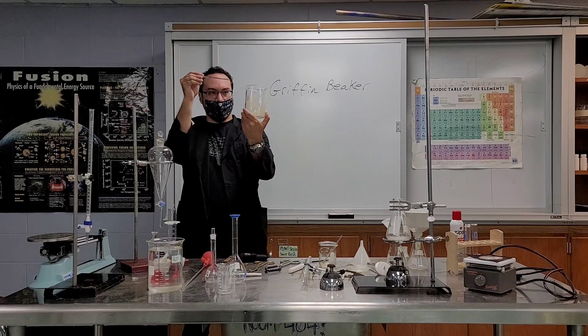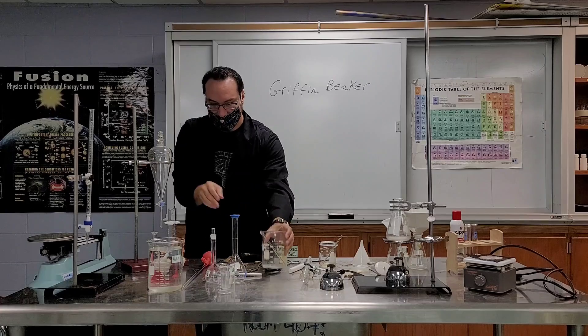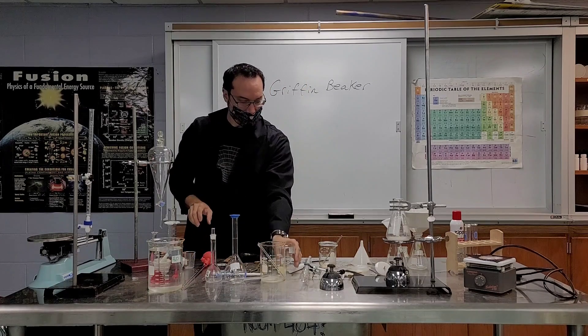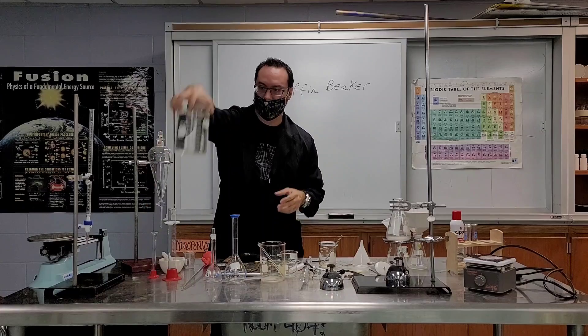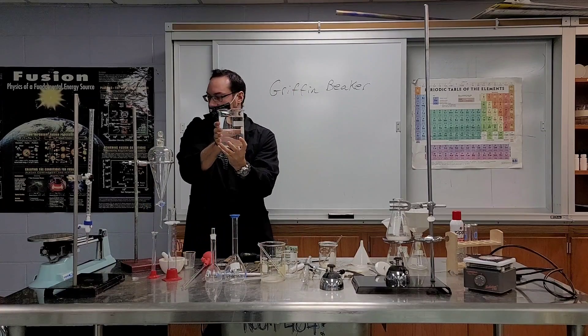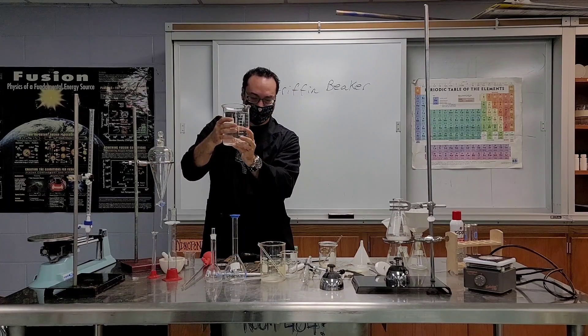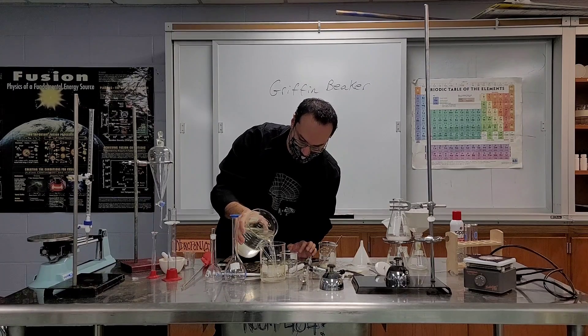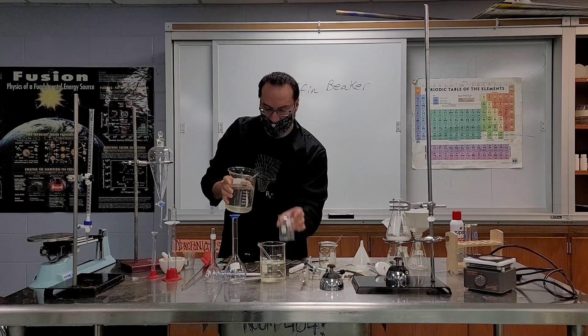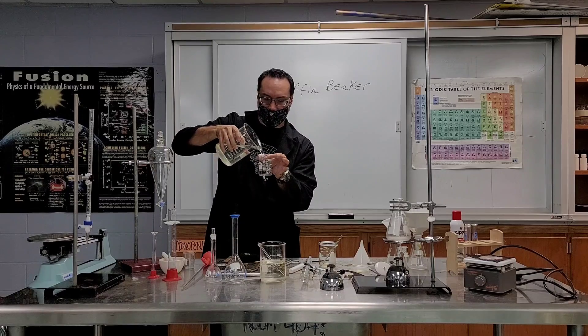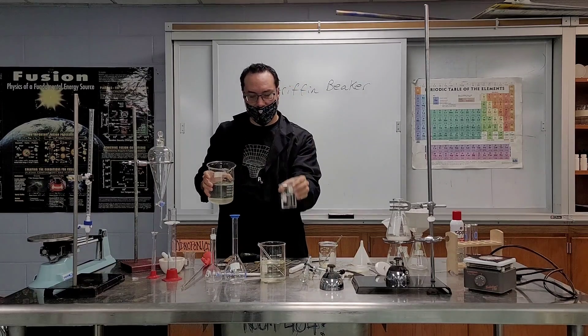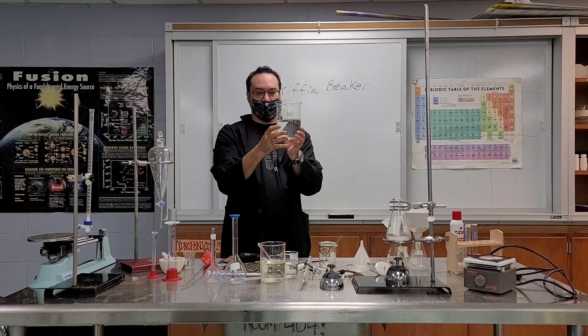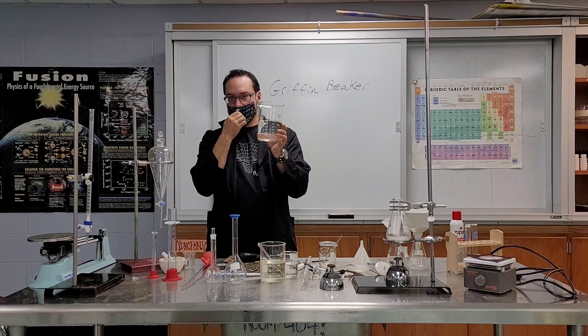This is a Griffin beaker, and so is this, and so is this. These are called Griffin beakers. If you notice, they have a little spout, okay, and that's for pouring, and to be quite honest with you, even though there are measurement lines on the side, which are called gradients, these are not very good for measuring in. So do not measure in Griffin beakers.